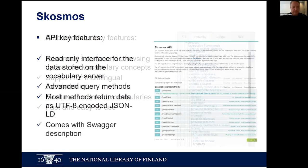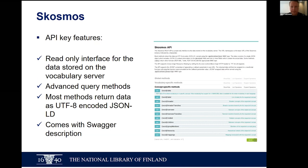In addition to the web interface, we have the API that you can use for integrating Skosmos with other systems. The API is a read-only interface for the data stored in your vocabulary server. There are several methods for querying the data available: global methods, vocabulary-specific methods, and concept-specific methods — many ways to explore concepts with the API. Most of these methods return data as JSON-LD. We also have Swagger interactive documentation that comes with the API.